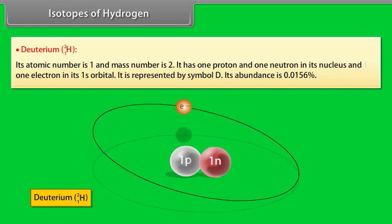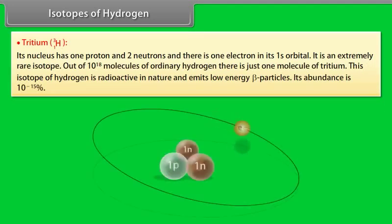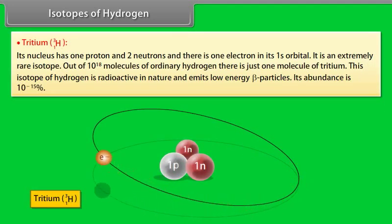Tritium: Its nucleus has one proton and two neutrons and there is one electron in its 1s orbital. It is an extremely rare isotope. Out of 10 to the power 18 molecules of ordinary hydrogen, there is just one molecule of tritium. This isotope of hydrogen is radioactive in nature and emits low-energy beta particles. Its abundance is 10 raised to the power minus 15%.